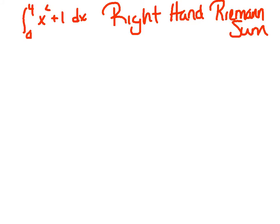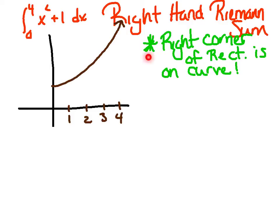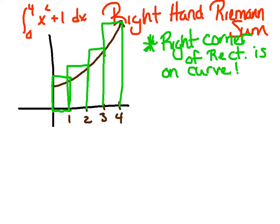We're going to use the exact same function, and this time do a right-hand Riemann sum — from 0 to 4 of x squared plus 1. Go ahead and re-sketch this in your notebook. In a right-hand Riemann sum, the right corner of the rectangle is on the curve. I still have 4 equal sub-intervals, but instead of going up on the left, I go up on the right first, up until I hit the curve, then come over and make my rectangle. Repeat for 2, 3, and 4.